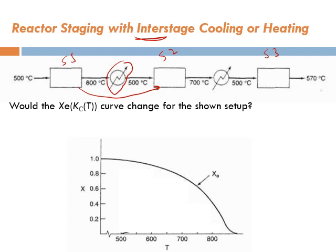For an exothermic reaction, we cool the stream down — say from 800 to 500 degrees C — and then it enters the second stage at the same initial temperature. As the reaction progresses, temperature increases because the reactor is operated adiabatically and the reaction is exothermic. The stream exits at a higher temperature, then goes through another interstage cooler, reducing the temperature back to 500 degrees C again before entering the third stage.